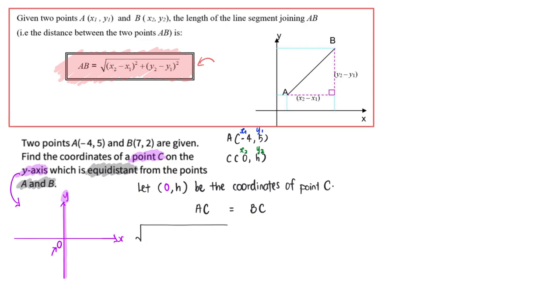And that's where you will see me writing this down: 0 minus negative 4, bracket square, plus h minus 5, bracket square.